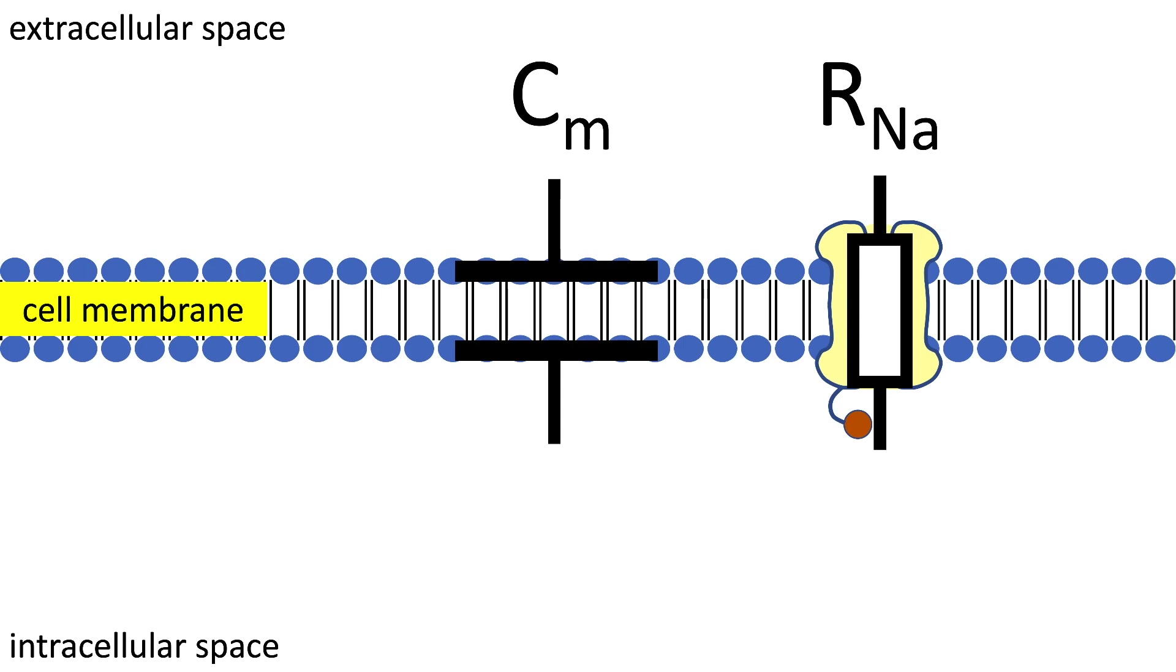We however will be using the conductance, which is just one over the resistance. We will be using this due to the fact that in the experiments Hodgkin and Huxley did, they actually measured the conductance and not the resistance.